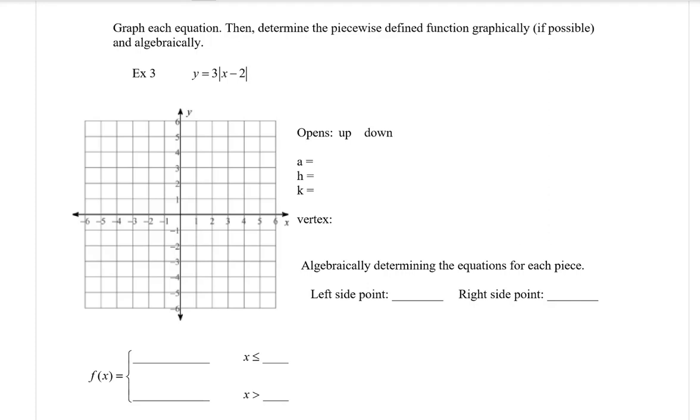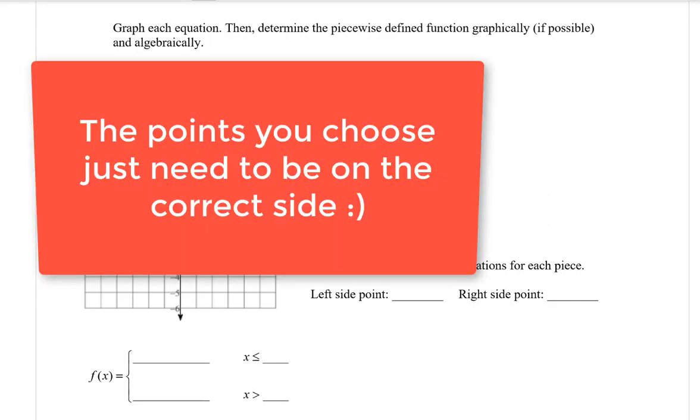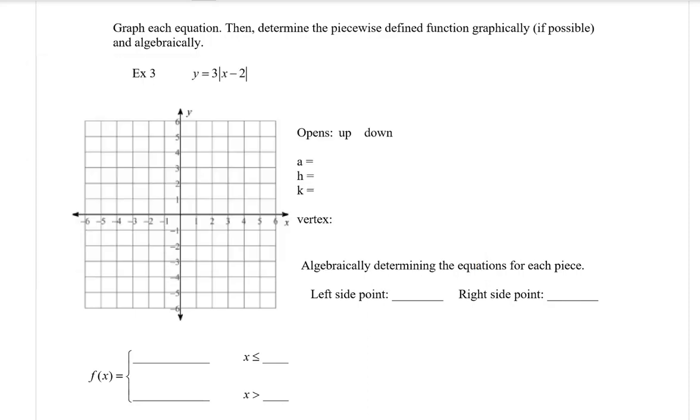But when you are picking your left side point and your right side point, it doesn't matter which points you pick, because you should still come up with the same equation in slope intercept form, y equals mx plus b form. So it doesn't matter what point you pick, you should still come out with these same equations. All right, so for the rest of you, let's go ahead and see what we're doing.